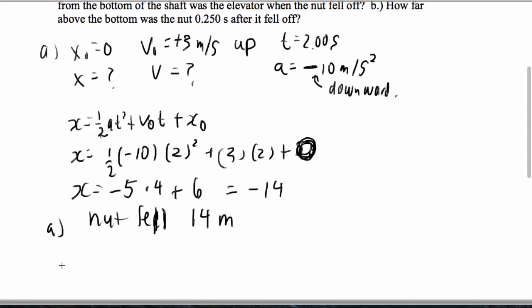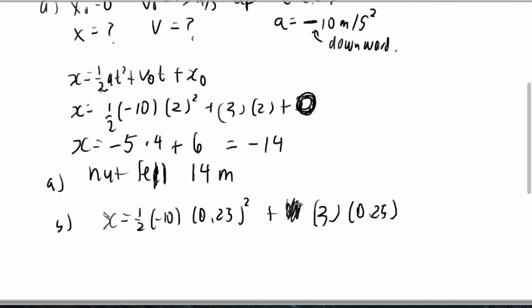Now for part B, how far above the bottom was the nut 0.25 seconds after it fell off? So we can actually keep this kind of simple. We can say that here. Let's just figure out how far it fell in 0.25 seconds and do a little calculation.